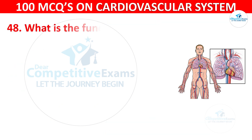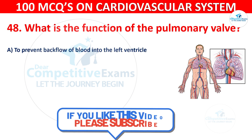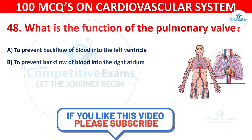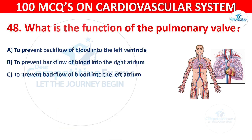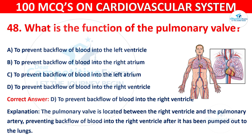Question 48: What is the function of the pulmonary valve? Options are: To prevent backflow of blood into the left ventricle, To prevent backflow of blood into the right atrium, To prevent backflow of blood into the left atrium, or To prevent backflow of blood into the right ventricle. The correct answer is D, to prevent backflow of blood into the right ventricle. The pulmonary valve is located between the right ventricle and the pulmonary artery, preventing backflow of blood into the right ventricle after it has been pumped out to the lungs.